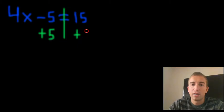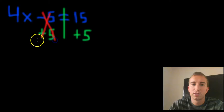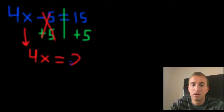Once we do that, we can see that the negative 5 and the positive 5 are going to cancel out and just give us nothing. So we can go ahead and cross those off and then bring down the 4x. Once we bring that down, we will get 4x is now equal to 15 plus 5, which will give us 20. So 4x equals 20. We're almost done. One more step.